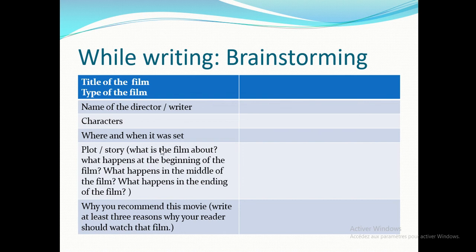Then write the plot or story: what is the film about (the main idea), what happens at the beginning, what happens in the middle (the most important events and changes), and what happens at the end. Include about four or five events. The last paragraph is why you recommend this movie — give at least three reasons, your opinion, what you like and don't like about the film, with reasons.